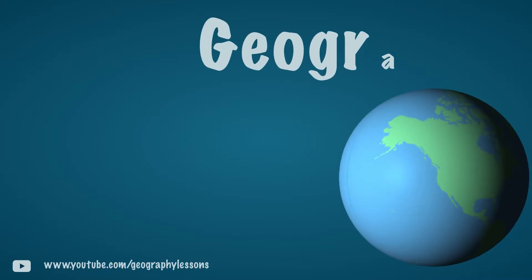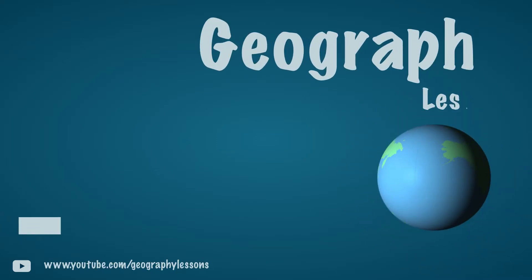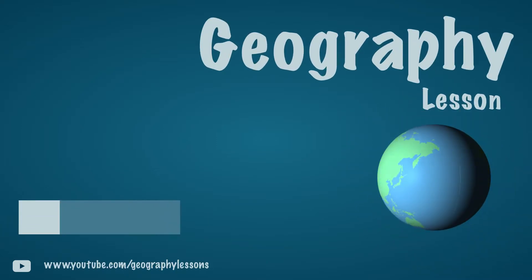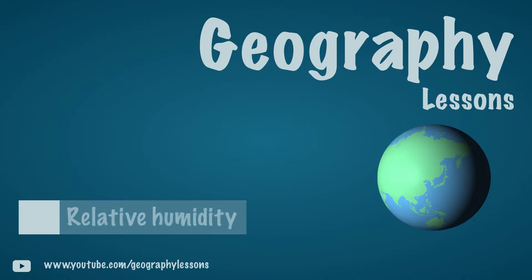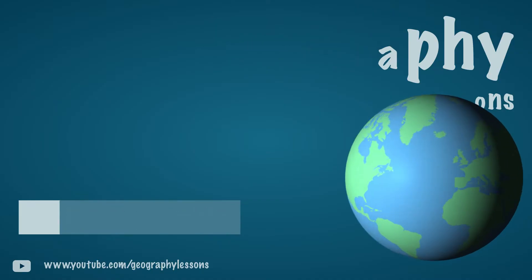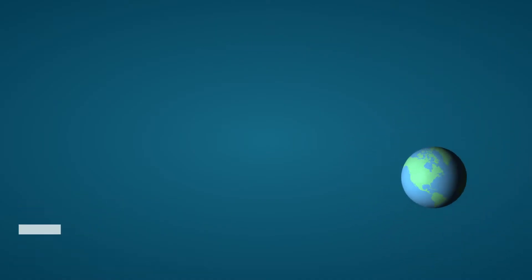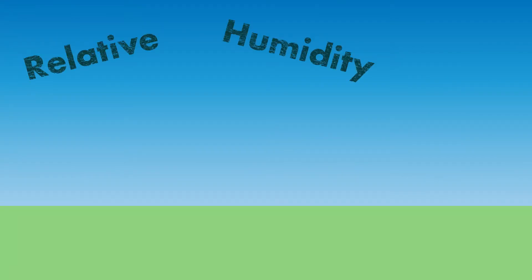In the previous video, you have already seen that water can occur in three phases: as water vapor, liquid water, or as ice. This video explains the relative humidity. Suppose there is a package of air. There is a certain amount of evaporated water in the air — water vapor.